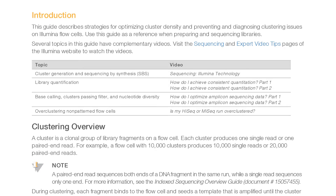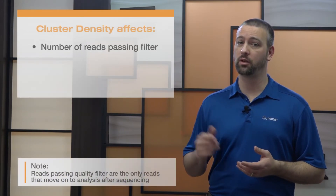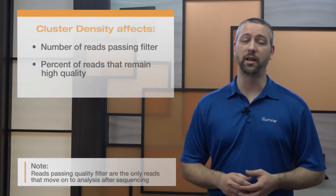Thanks, Michelle. One of the most critical metrics in assessing sequencing run performance is cluster density. This metric impacts both data quality and total yield due to its effect on the number of reads passing filter and the percent of those reads that remain high quality.